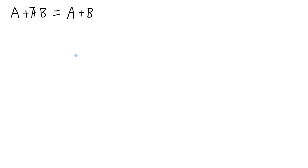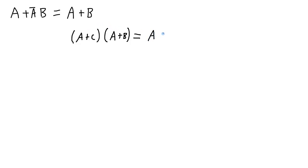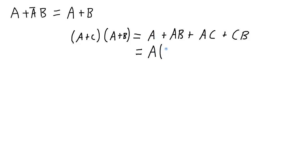There is one more thing I want to do, because I promised earlier in the video that I would prove that this expression is true. To go about this proof, I'll write out a slightly different expression: (a OR c) ANDed with (a OR b). Expanding this out: a AND a gives me a; ORed with a AND b gives ab; ORed with c AND a gives ac; ORed with c AND b.